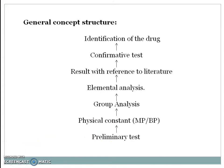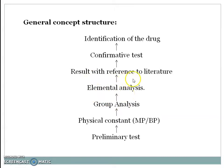General Concept Structure: First we perform the preliminary test — involving color, odor, taste, and solubility. Then physical constant determination — melting point or boiling point. Then group analysis and elemental analysis, result with reference to literature, followed by confirmative test. After confirmation, we get the idea about identification of the drug.